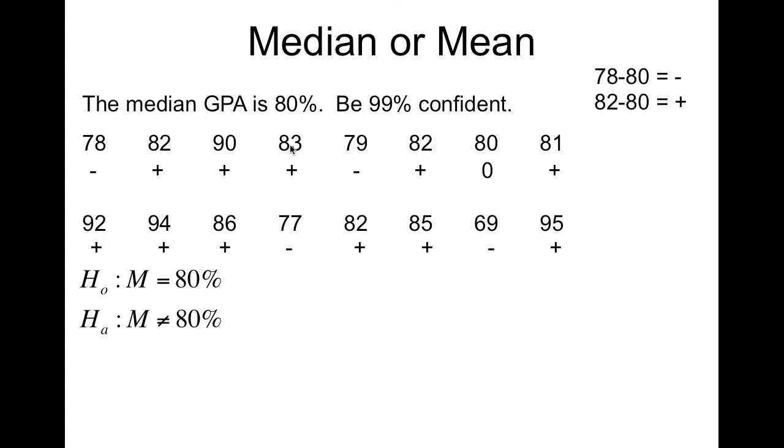90 minus 80 is positive. 83 minus 80 is positive. 79 minus 80 is a negative. 80 minus 80 is zero. So there's my positive and negatives, just like last time, and you're counting these up just like last time. Positive signs, I have 11. Negative signs, I have 4. Lesser of the two values is going to be our test statistic, so test stat is 4.